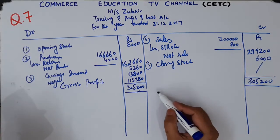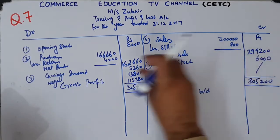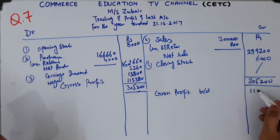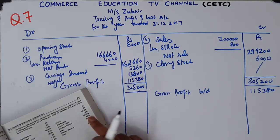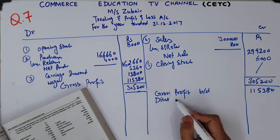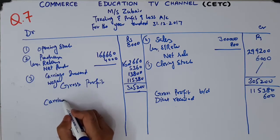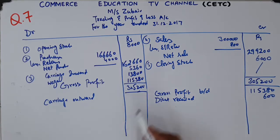Now we take this gross profit and bring it down to the profit and loss account — gross profit brought down. We bring it here because this side was larger; that balance is a credit balance, so it comes on the credit side: 115,380. On the income side, we write discount received: 600. On the expense side, carriage inward was already written above — carriage outward is an indirect expense, so it comes here: 1,580.